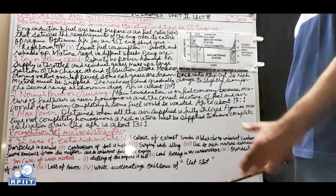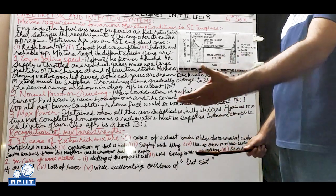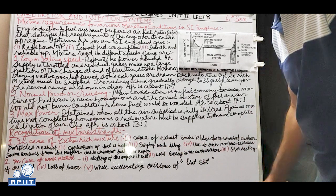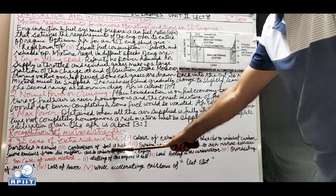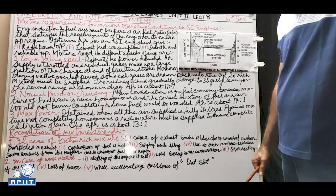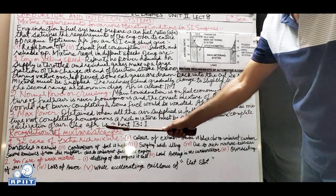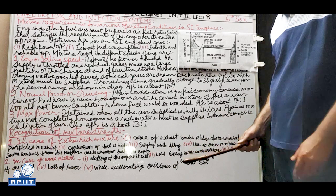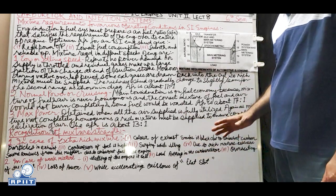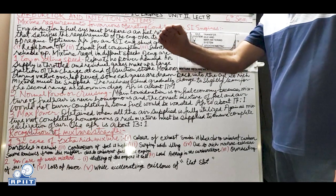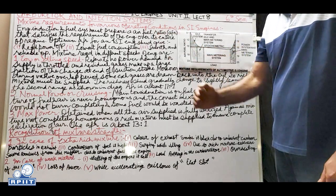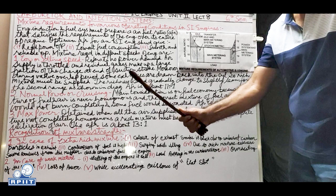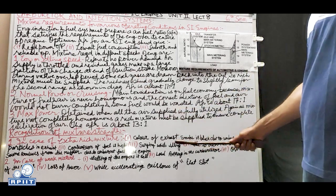Further symptoms of a rich mixture: high fuel consumption - when you calculate average mileage you will find it is very low, indicating the mixture strength was too high. Also, surging while idling at a traffic light - automatically, without pressing the accelerator, the engine speed increases and then decreases repeatedly. This automatic variation in engine speed is called surging and is an indication that the mixture is rich.